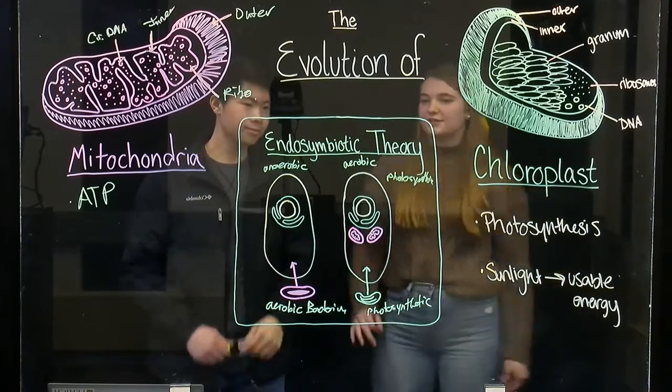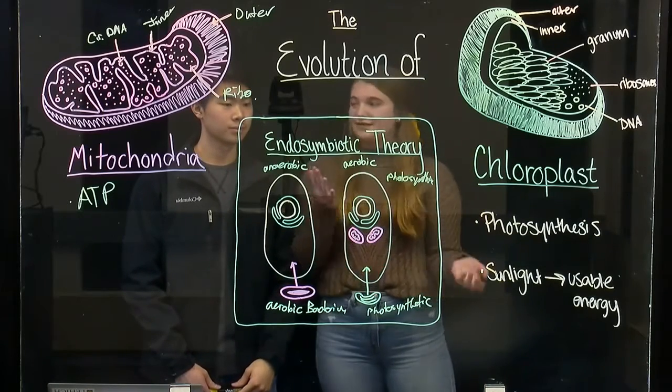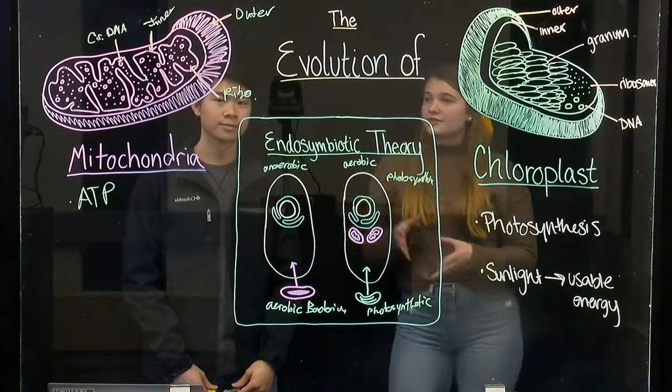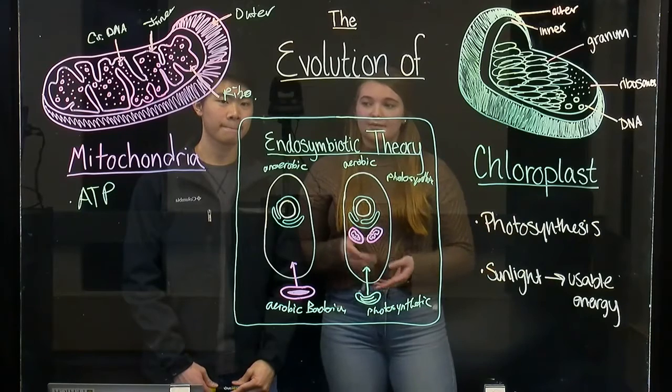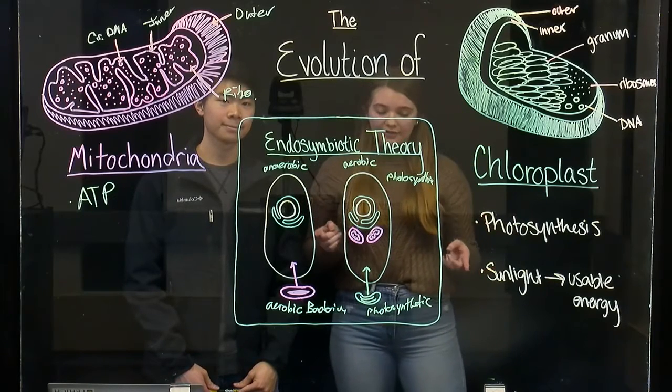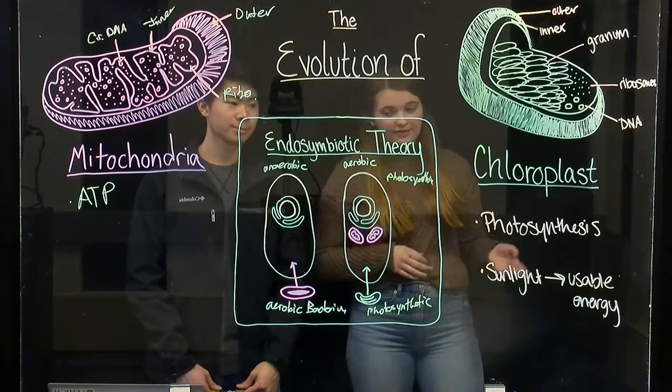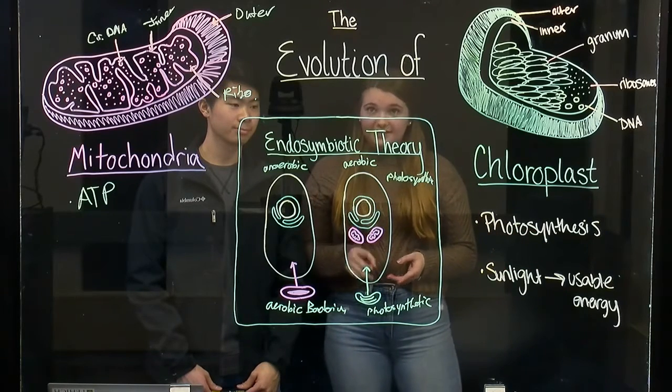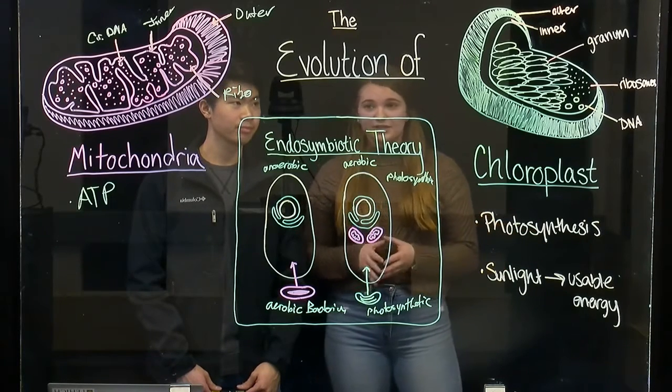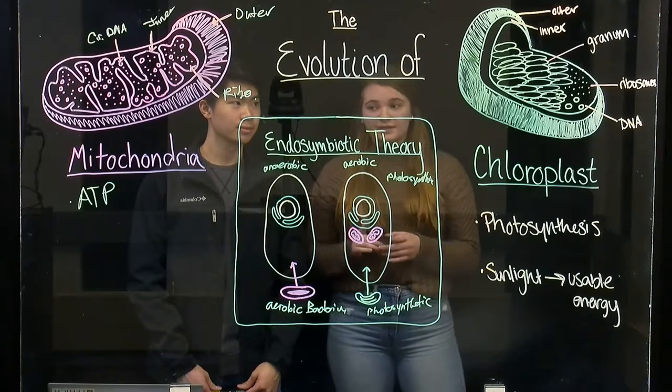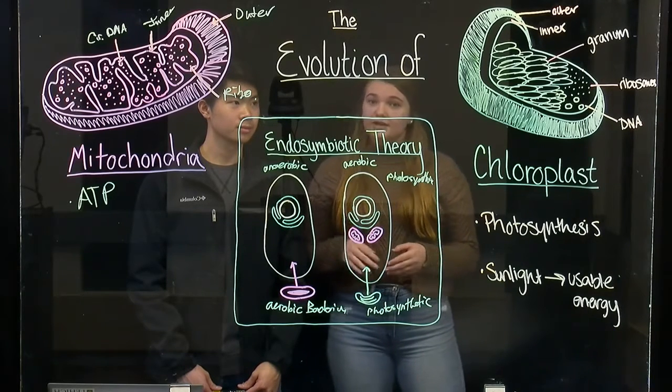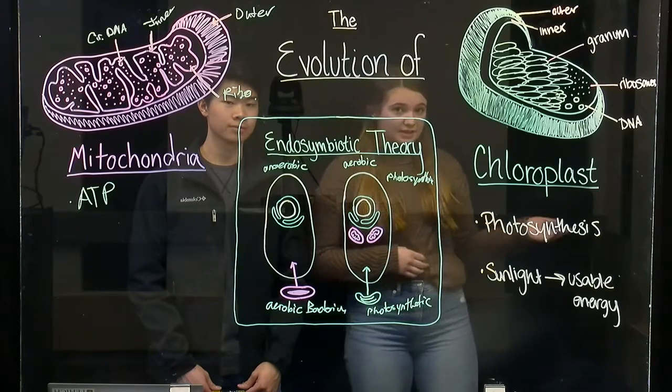In addition to this endosymbiotic theory, some other supporting evidence is that both the mitochondria and the chloroplast replicate through fission, just like bacteria cells. In fact, the host eukaryotes actually have to regulate the tendency for the mitochondria and chloroplast to rapidly replicate just like bacteria do.